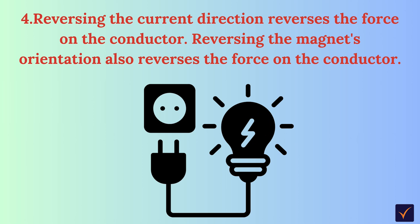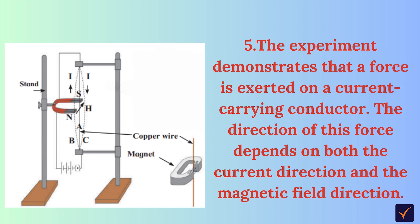Reversing the magnet's orientation also reverses the force on the conductor. The experiment demonstrates that a force is exerted on a current-carrying conductor, and the direction of this force depends on both the current direction and the magnetic field direction.